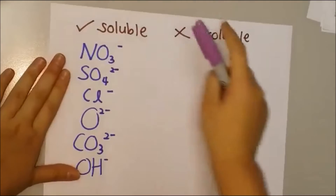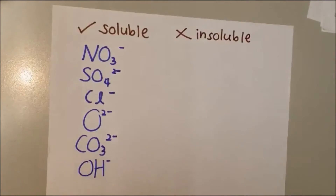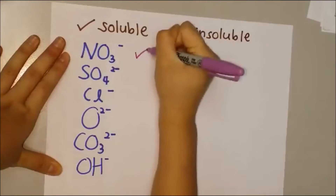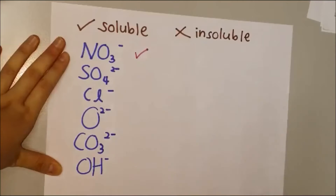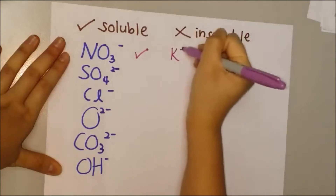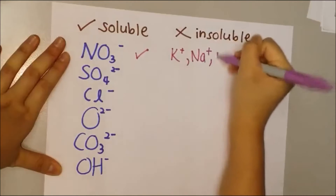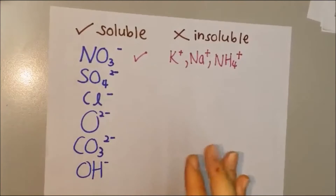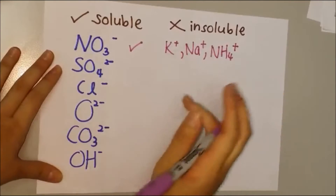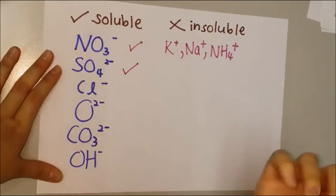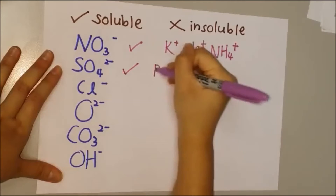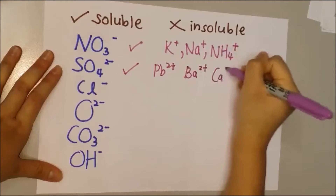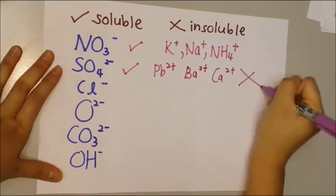Nitrate is always a soluble salt, no matter which ion it reacts with. Sodium, potassium, and ammonium are also all soluble salts. For sulphate, it is soluble, but when it reacts with lithium, barium, and calcium, it becomes insoluble.